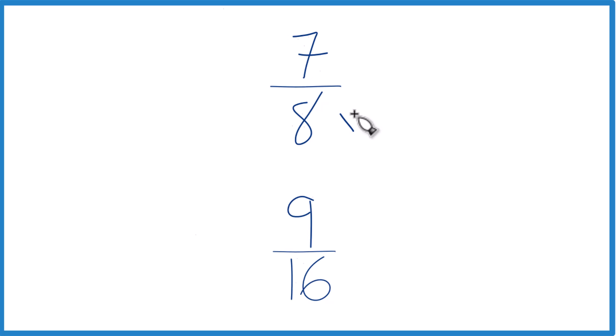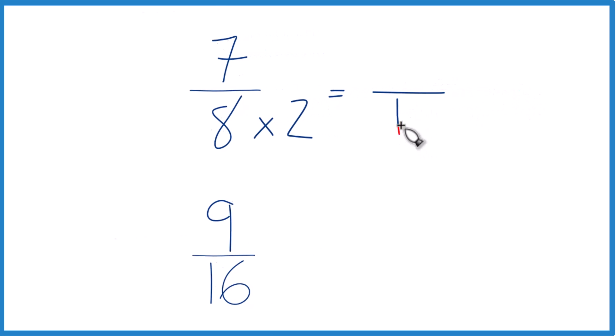Why don't we multiply 8 times 2? Because 8 times 2, that equals 16. And down here we already have 16. We'll just keep this as 9/16.